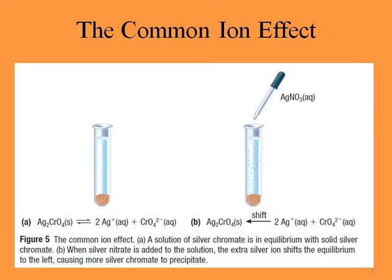You can also see this in the figure. On the left-hand side we have silver chromate and its ions — the solution of silver chromate in equilibrium with solid silver chromate. In part B, when silver nitrate is added to the solution, the extra silver ions shift the equilibrium to the left, causing more silver chromate to precipitate. The equilibrium shifted to the left because both the saturated silver chromate solution and the silver nitrate solution contained silver ions.